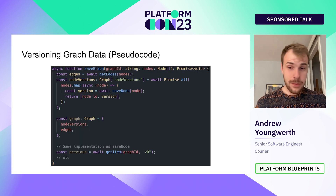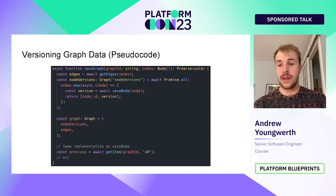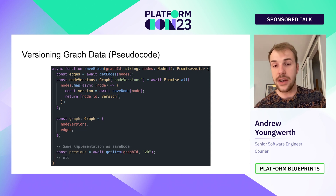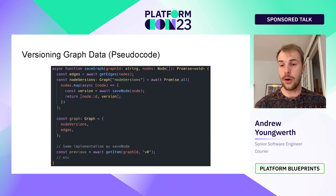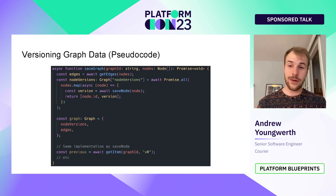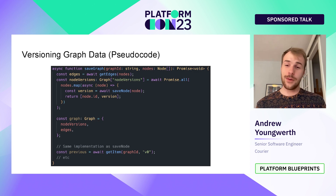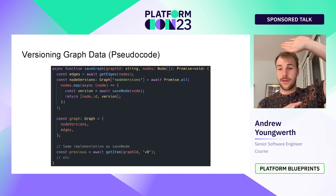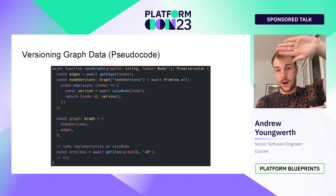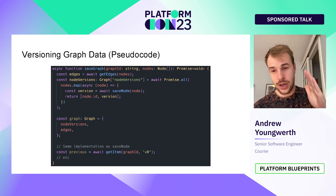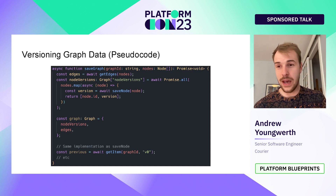That's pretty much all there is to it. The key implementation detail is that we're storing the edges and the nodes separately across two tables — a graph table and a nodes table. The graph table holds a snapshot of all the different node revisions we're on each time we save, along with the edge connections defined between nodes.